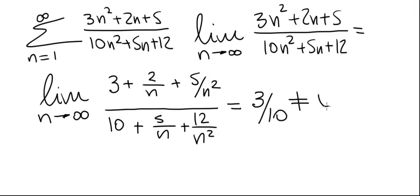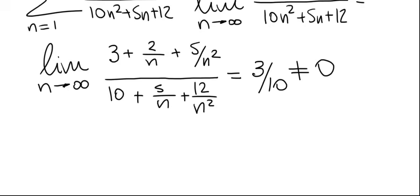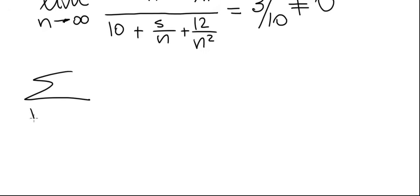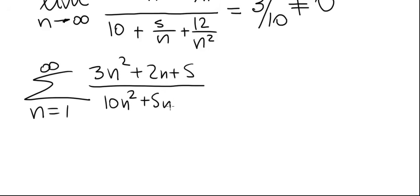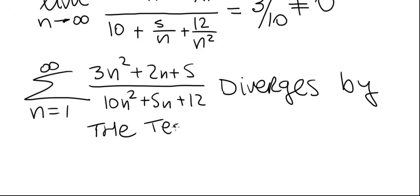Well, that's not 0. Therefore, by test for divergence, this series will diverge. So once this limit is not 0, we immediately conclude that the series, we can rewrite it again, the summation from 1 to infinity of 3n squared plus 2n plus 5 divided by 10n squared plus 5n plus 12 diverges. And you can state the reason why by the test for divergence. And that's the answer.